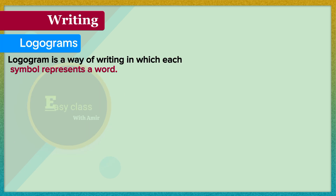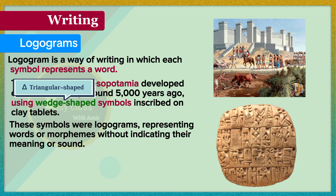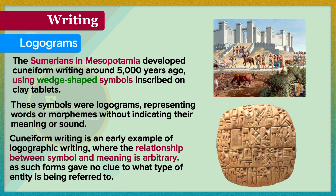Logograms. A logogram is a way of writing in which each symbol represents a word. The Sumerians in Mesopotamia developed cuneiform writing around 5,000 years ago, using wedge-shaped symbols inscribed on clay tablets. These symbols were logograms, representing words or morphemes without indicating their pronunciation or sound. Cuneiform writing is an early example of logographic writing where the relationship between symbol and meaning is arbitrary, as the form of the symbol gives no clue to what type of entity is being referred to.